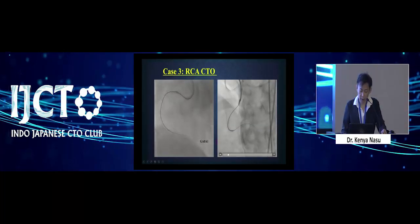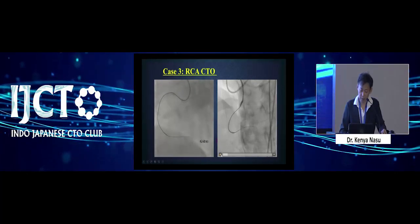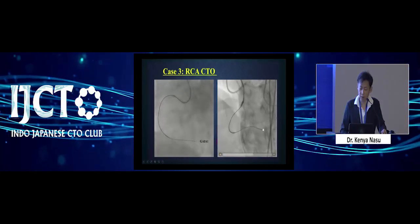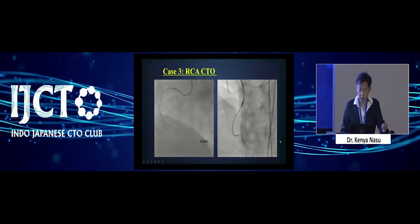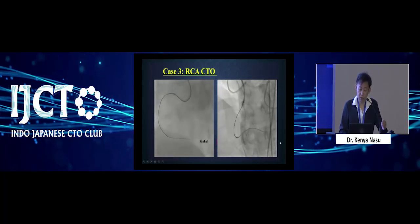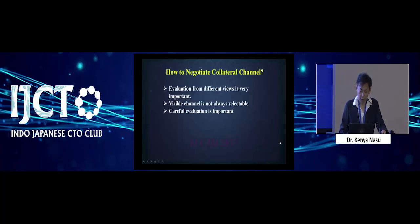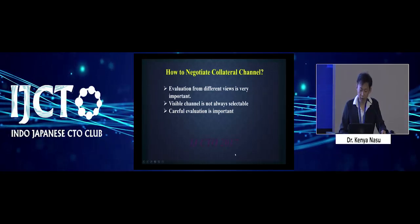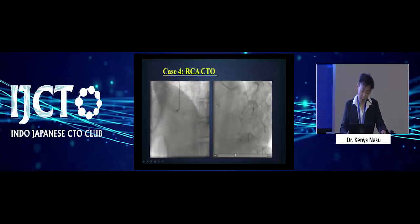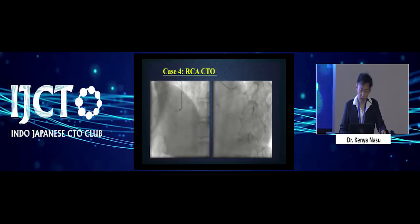Of course I started from CO3, but finally I cannot pass this seemingly promising channel. Fortunately, in this case I could recognize from the antegrade that Lee first goes to the PD branch — so it's okay. But the visible channel that looks promising is not always promising. Careful evaluation is very important.